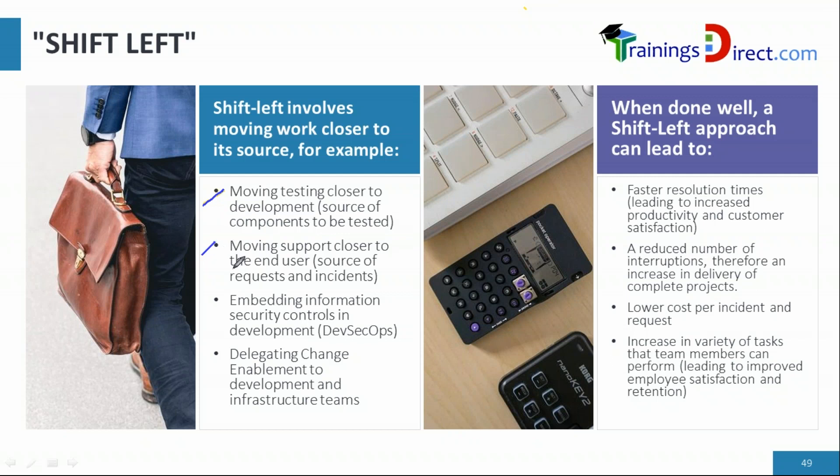The second example is moving support closer to the source of a request or incident. Normally we have tiered support — level one, level two, level three. Can we not have all levels in a single team, rather than escalating from level one to level two and then to level three?